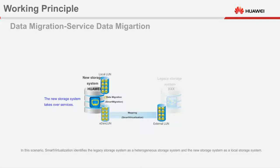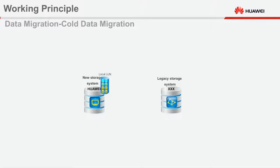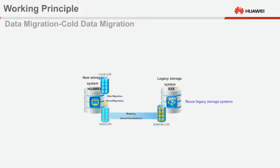In this scenario, Smart Virtualization identifies the legacy storage system as a heterogeneous storage system and the new storage system as a local storage system. Scenario 2: A large amount of cold data occupies a new storage system after services run for a period of time, causing a waste of storage resources. Smart Virtualization works with Smart Migration to migrate the cold data to a legacy storage system, achieving the reuse of storage resources.